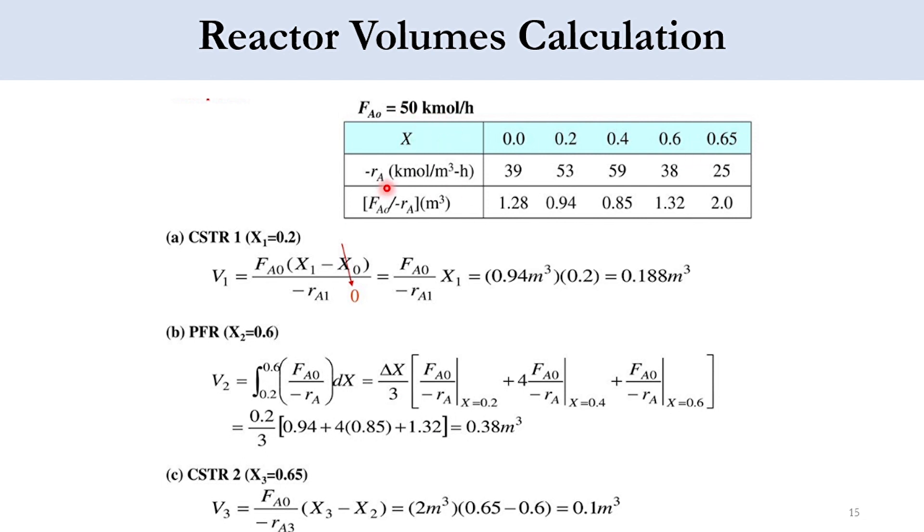Now we have been given that FA0 is 50 kmol per hour. So x is given, minus RA is given. Dividing FA0 over minus RA will give an answer as 1.28, 0.94. We have simply divided 50 by 39, 53, 59, 38, and 25, and accordingly we have got these answers.